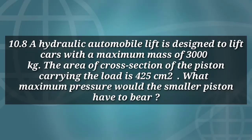Example 10.8: A hydraulic automobile lift is designed to lift a car with a maximum mass of 3000 kg. The cross-sectional area of the piston carrying the load is 425 cm². What is the maximum pressure the smaller piston would have to bear?